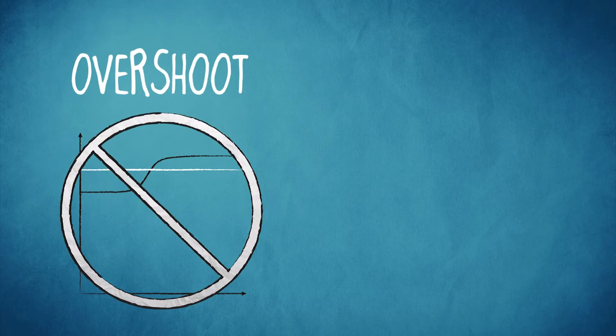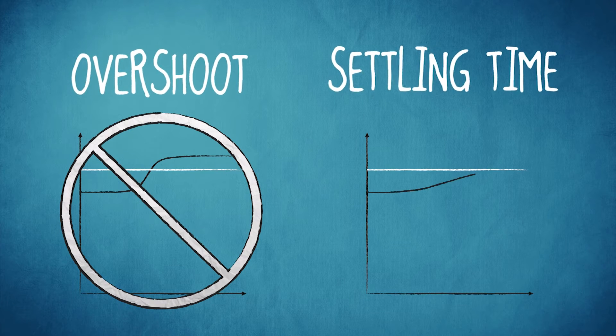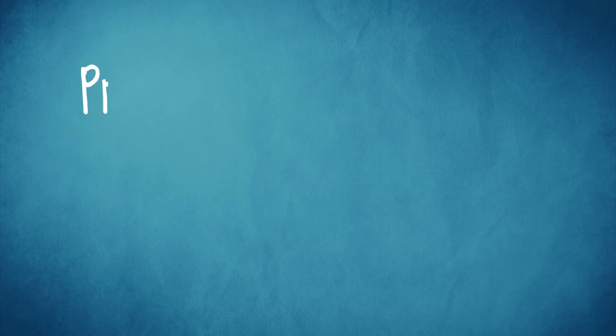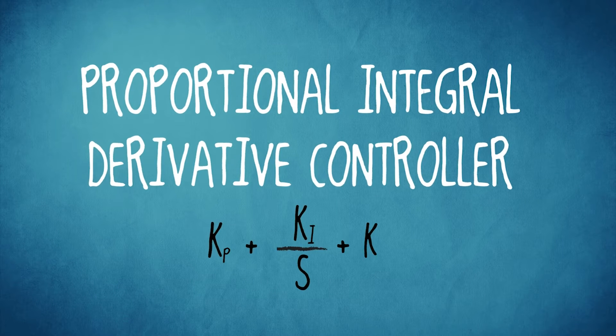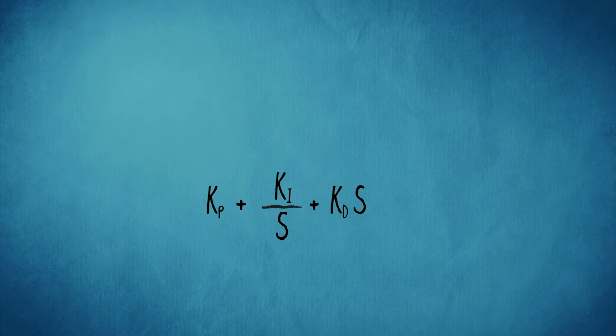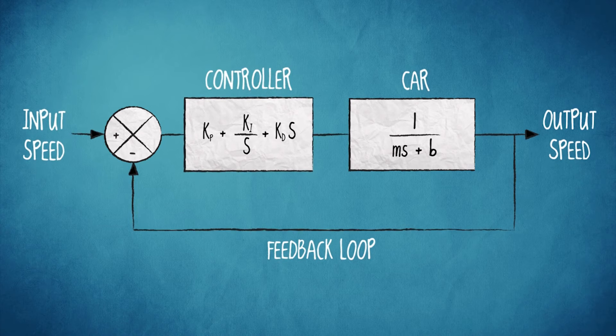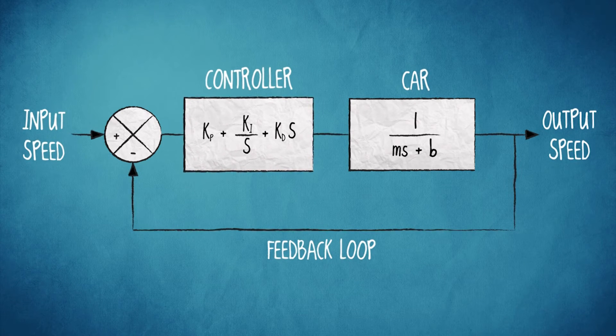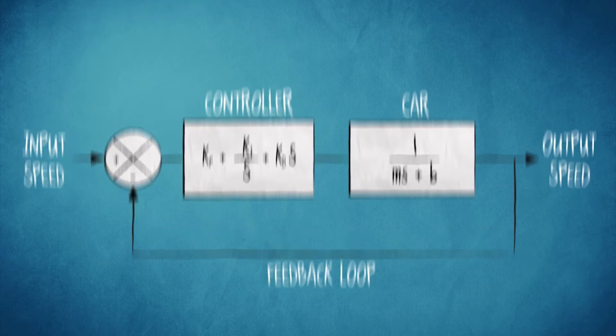The parameters need to be tuned so that the system doesn't overshoot by accelerating past the set speed and it doesn't take too long to settle. To achieve this we use a proportional integral derivative controller within our system. Using complex mathematical procedures such as root locus and bode the system can be tuned to achieve the desired results.